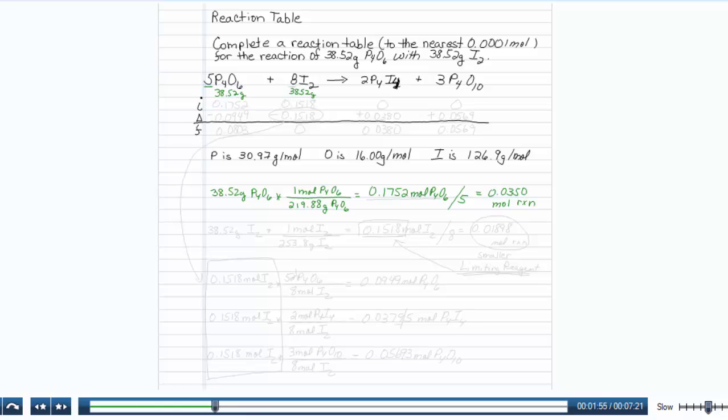Now let me try the same with the iodine. 38.52 grams of I2, and once again, we'll figure out how many moles that is. So let's see, what is the molar mass of I2? There are 253.8 grams of I2 in one mole of I2.